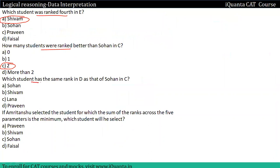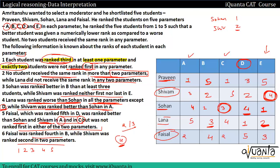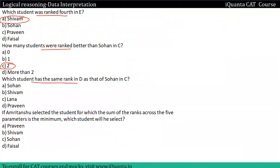Question: Which student has the same rank in D as Sohan's rank in C? Sohan's rank in C is three. Looking for rank three in D — the answer is Praveen, option D.